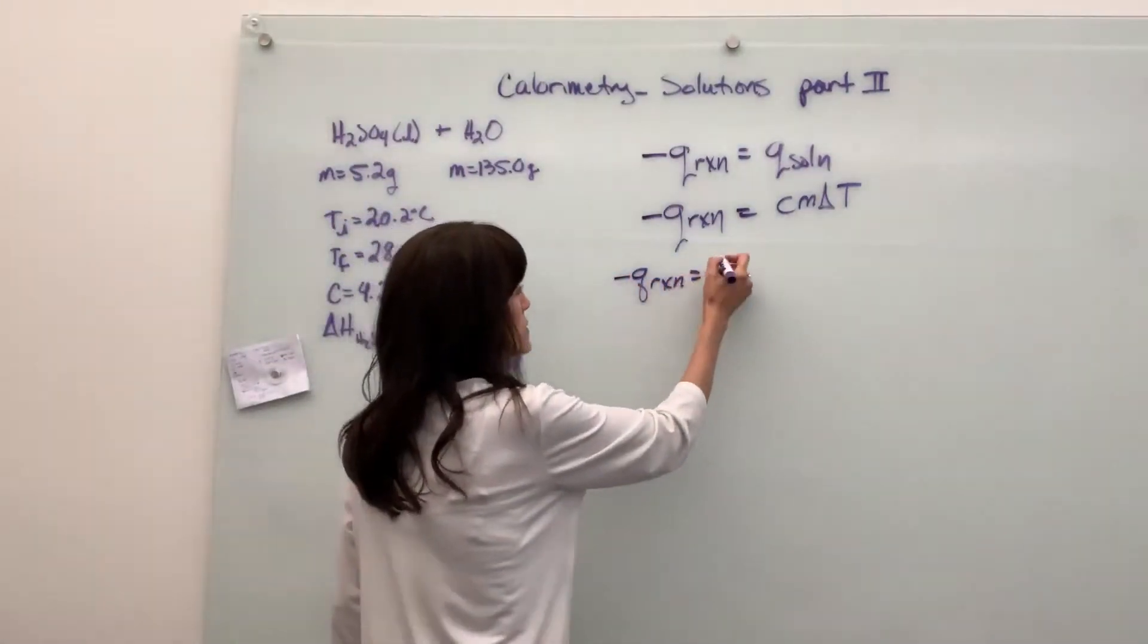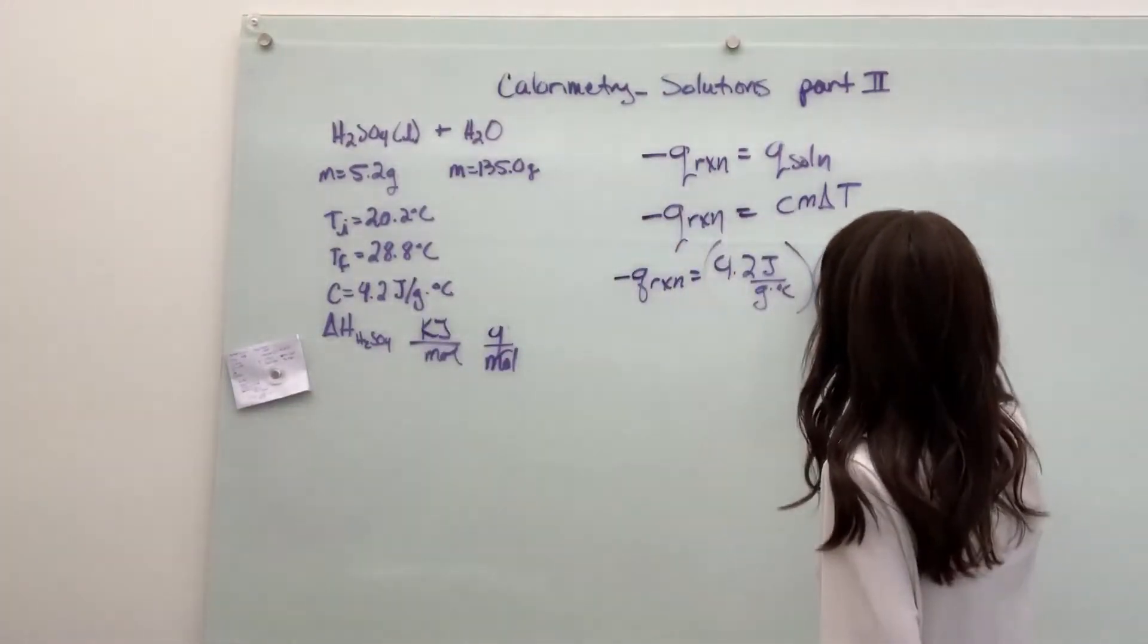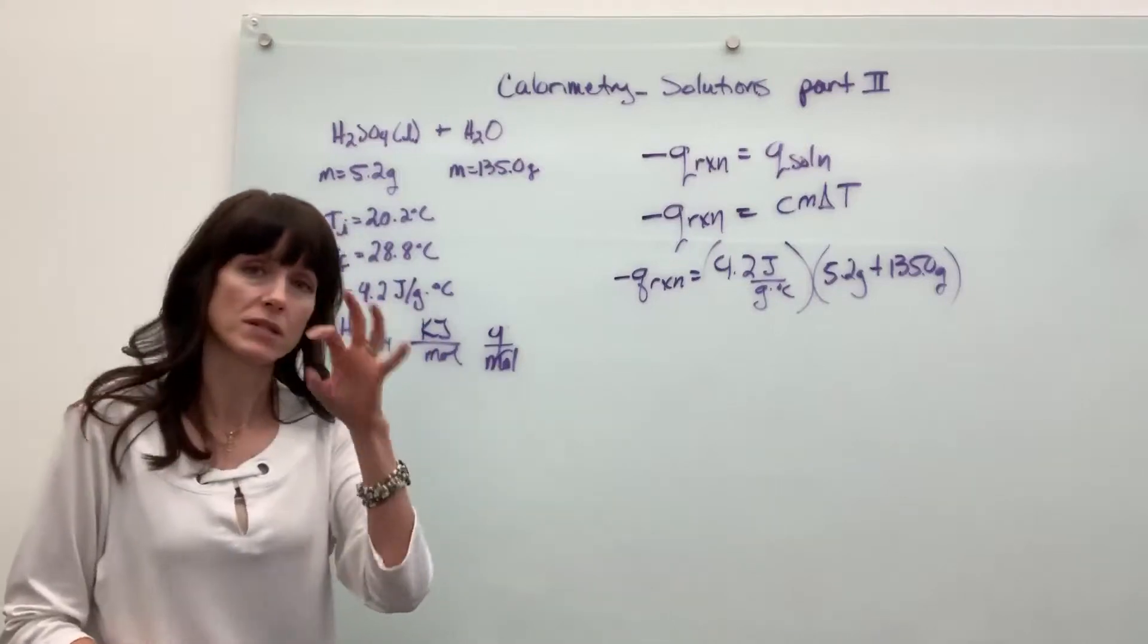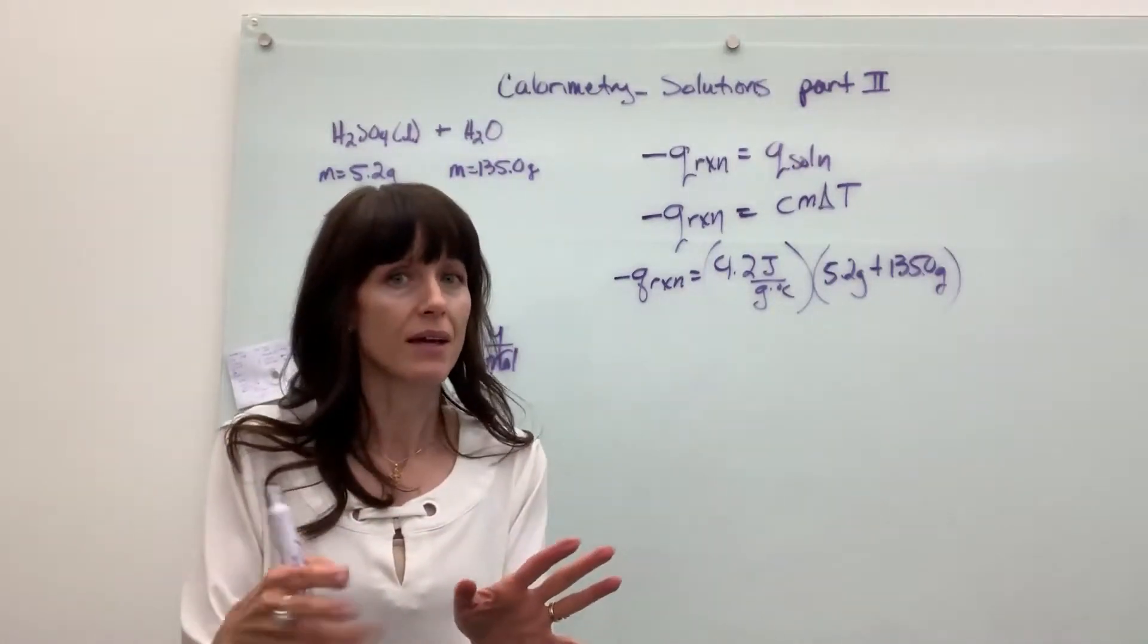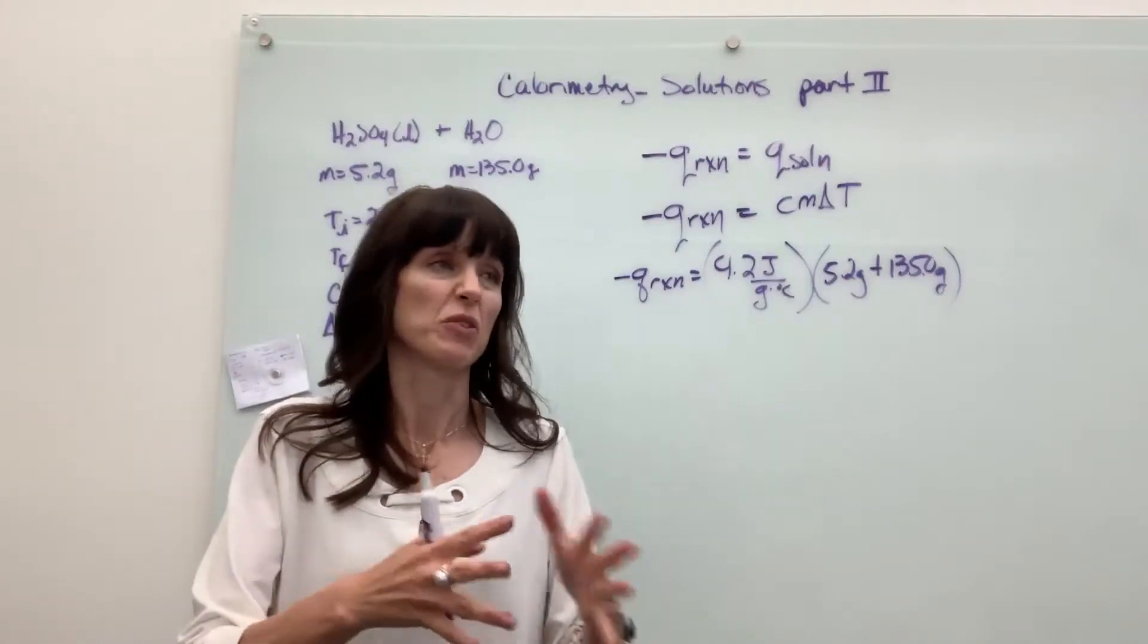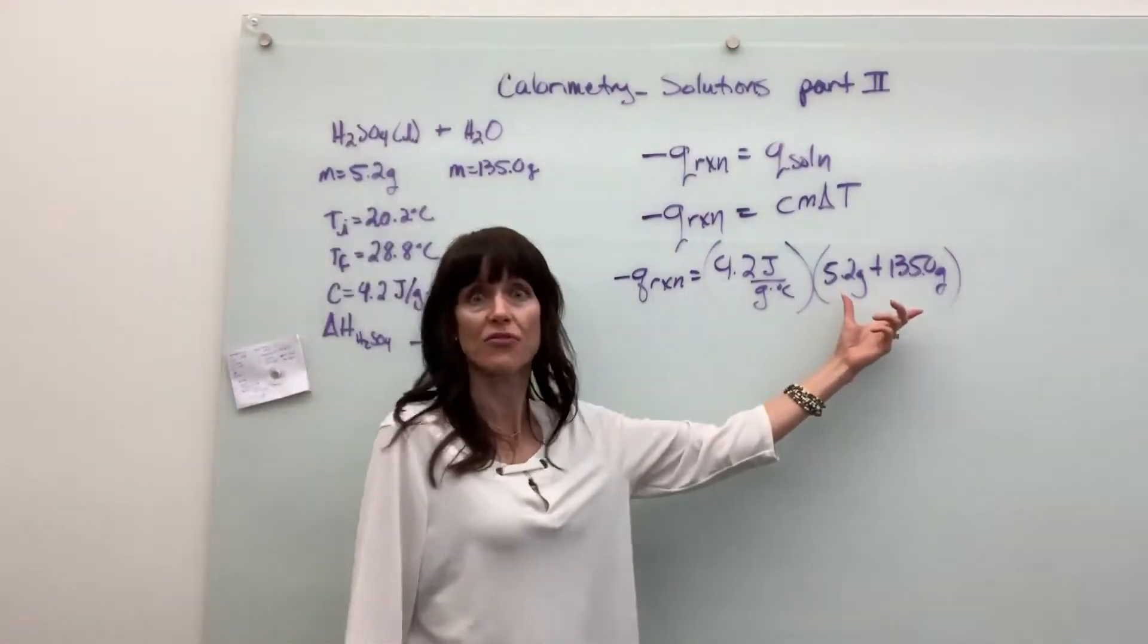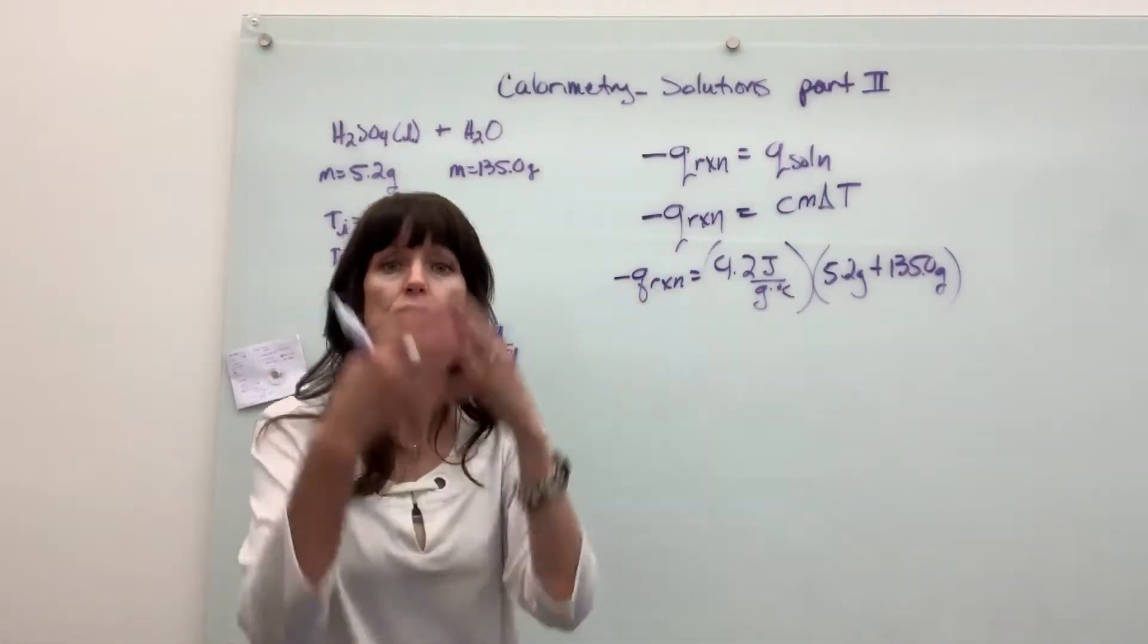Let's go ahead and plug in. Negative Q of reaction equals 4.2 joules by grams degree C. Now this is the part where you have to be careful. It is going to be 5.2 grams plus 135 grams of water. I think it was in 2014, there was an AP question and it was a solution really similar to this. You had one small substance that was being added, I think it was a salt, a salt that was being added to water. I heard from somebody higher up in AP, she came to the university. She shared that out of the 160,000 students that took the test, less than 100 remembered to add the two substances in the solution.